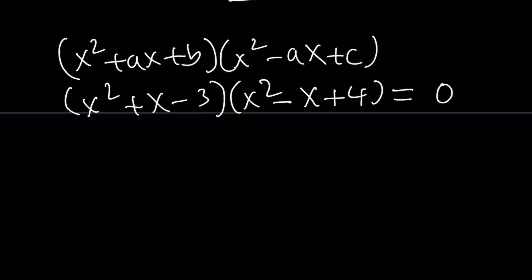Now set it equal to 0 and solve this. Easy because these are quadratics. Let's start with the first one. From here we get negative b plus minus the square root of b squared, which is 1, minus 4ac plus 12. And that's going to give you negative 1 plus minus root 13 over 2.